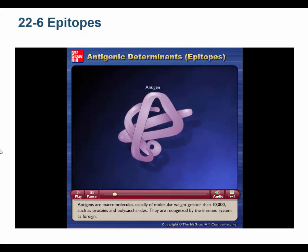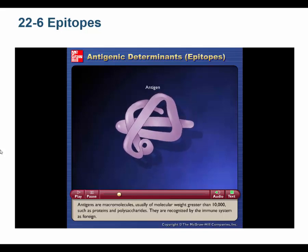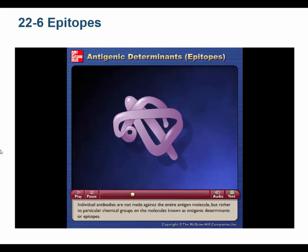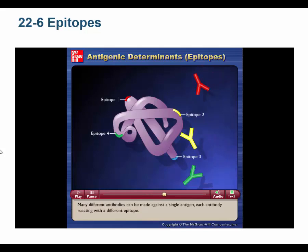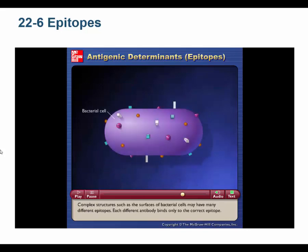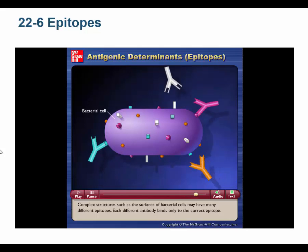Antigens are macromolecules, usually of molecular weight greater than 10,000, such as proteins and polysaccharides. They are recognized by the immune system as foreign. Individual antibodies are not made against the entire antigen molecule, but rather to particular chemical groups known as antigenic determinants or epitopes. Many different antibodies can be made against a single antigen, each reacting with a different epitope.